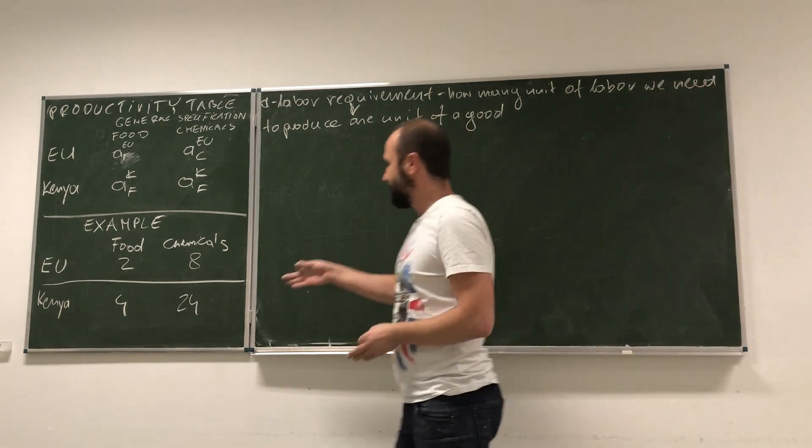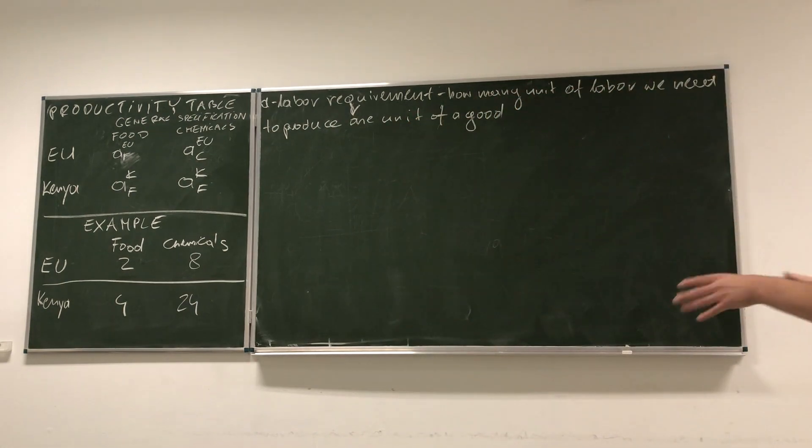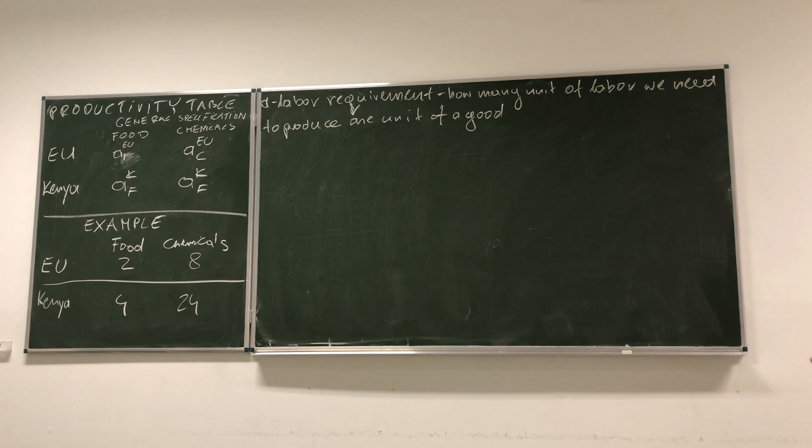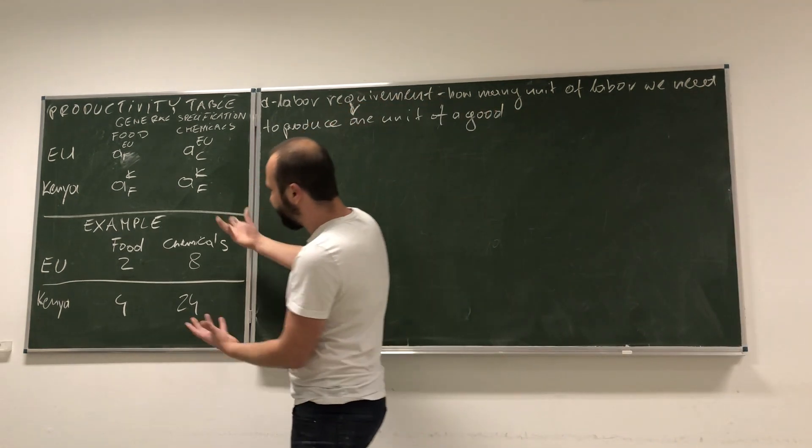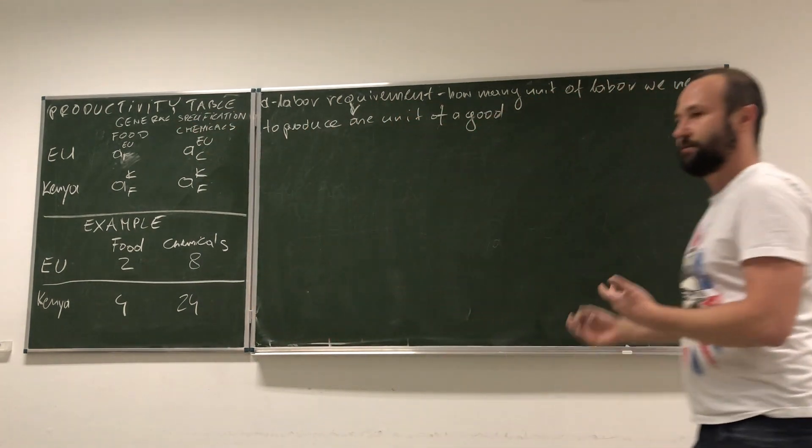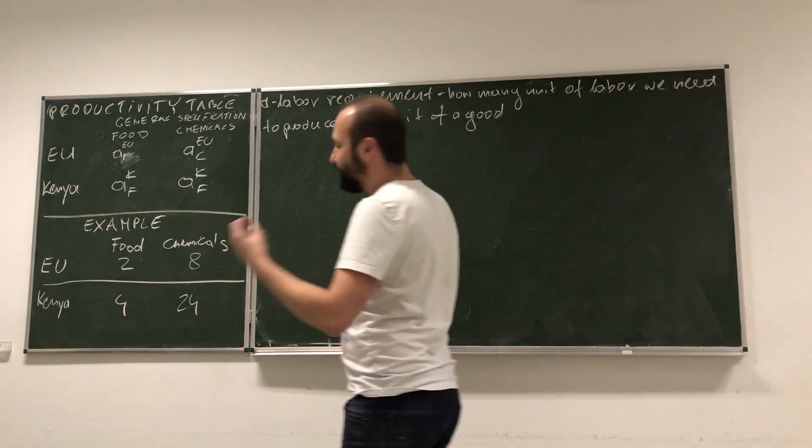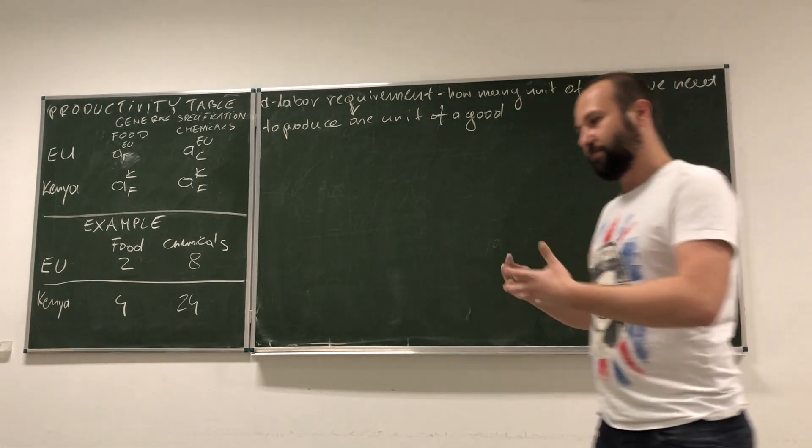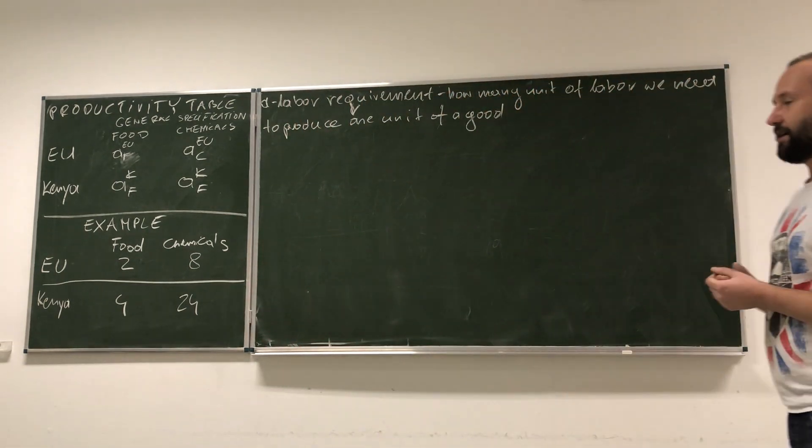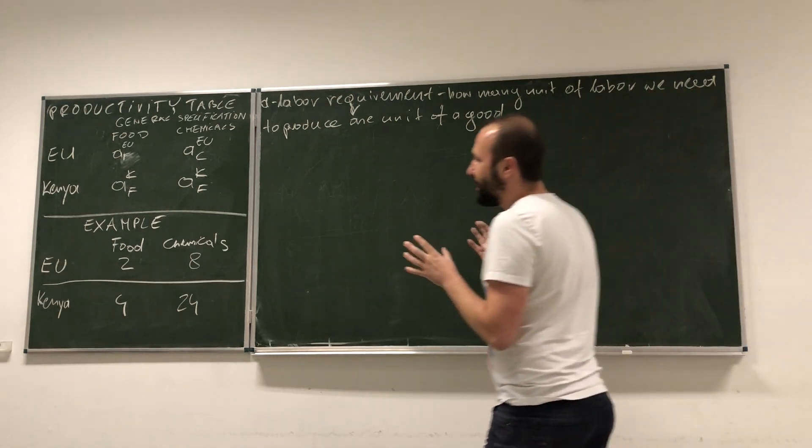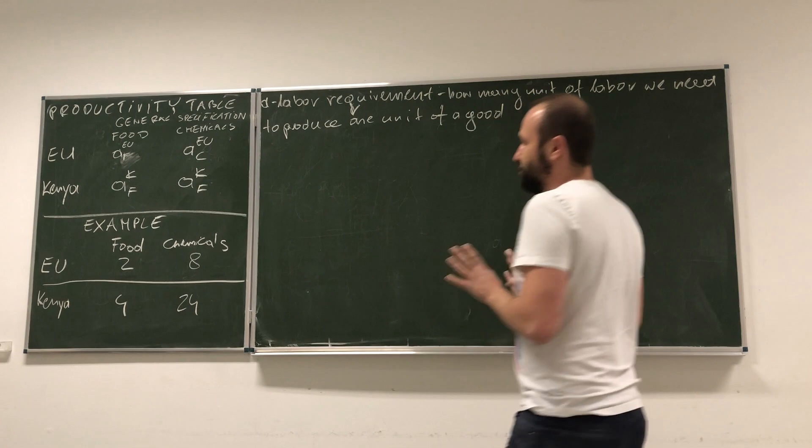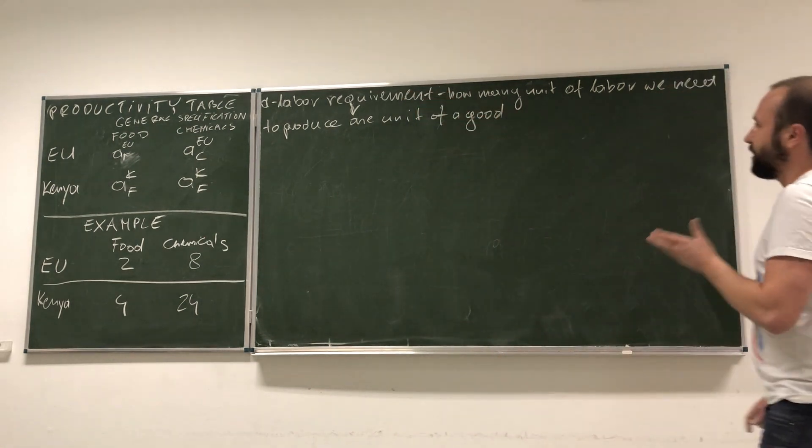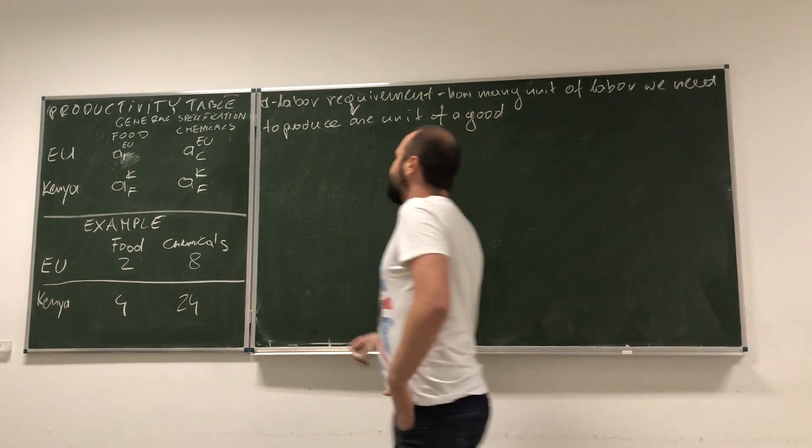It's better at producing food, it's better at producing chemicals. So the only trade we should see are exports from the EU going to Kenya. But in reality, we actually observe that trade flows go both ways. So, we clearly see that the absolute cost advantage model is not able to explain this. This is why what we're going to do is to discuss comparative advantage, comparative cost advantage model. And in order to understand why those two countries should actually trade with each other, we should use the concept of opportunity cost.